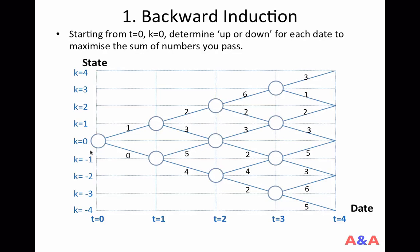This initial state is given. Every period we choose either up or down. If you go up at date 0, then at date 1 your state is k equals 1. If you choose to go down at date 0, then at date 1 your state is negative 1. The objective is to maximize the sum of four numbers you go through. Because you have to make this up or down decision four times, there are 2 to the power 4, equal 16, possible routes.